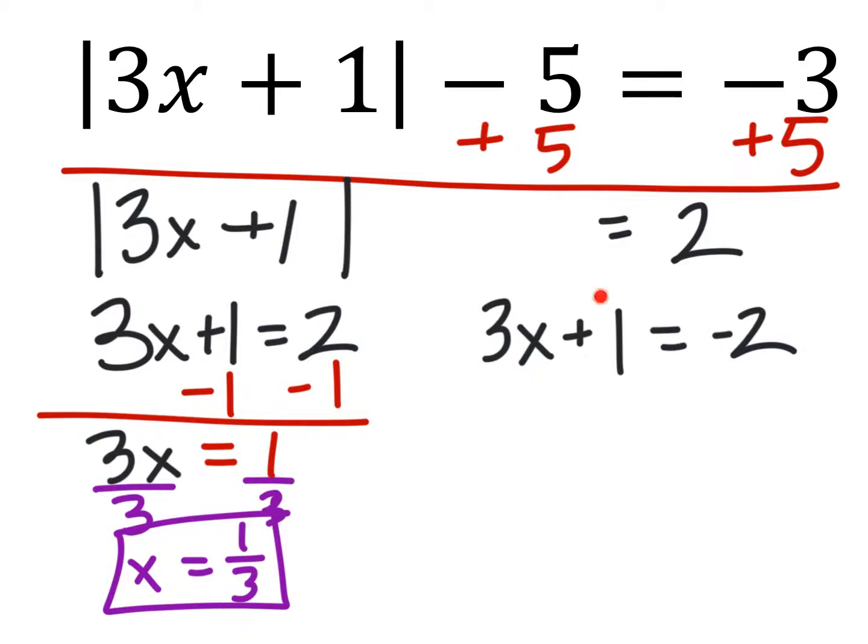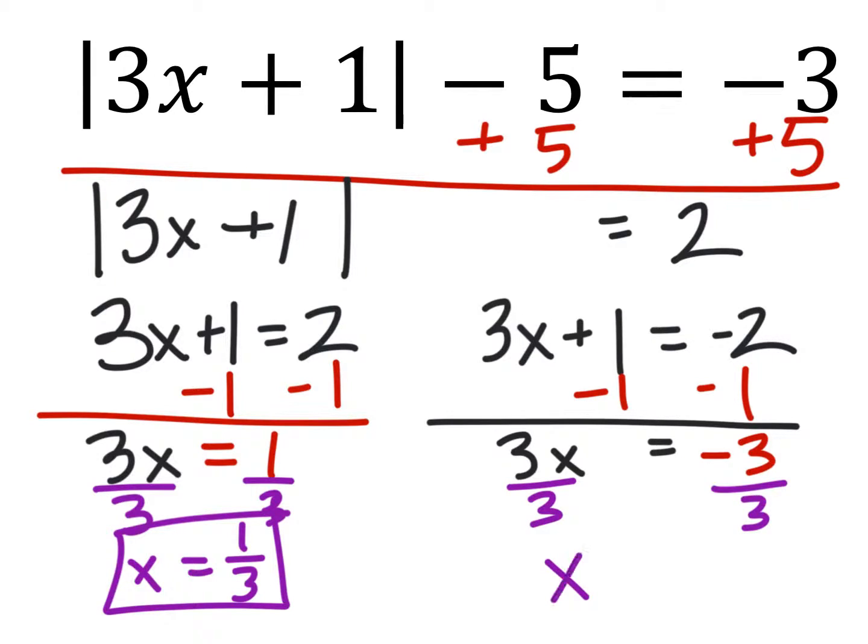So the next thing we're going to do is work with this equation here on the right by subtracting 1 from both sides. And that gives us 3x equals negative 3 and then we'll just divide by 3 on both sides. Finally, this gives us x equals negative 1. So we have two answers here.